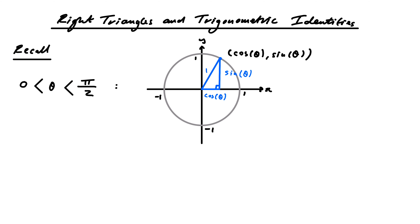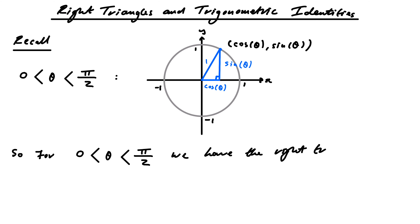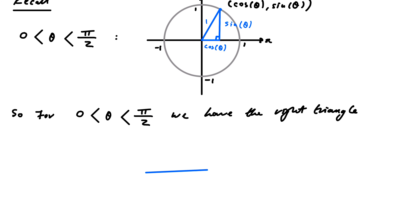So let's summarise what we've got. For θ in this range, we have the right triangle with sides 1, sin θ, and cos θ. Let me draw another version of it, a bit bigger. The angle in here is θ.